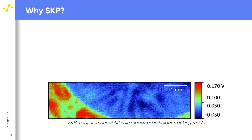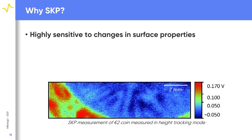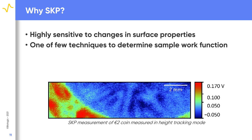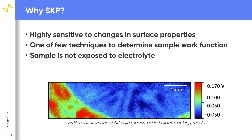What are the advantages of the SKP technique? SKP is highly sensitive to surface properties, making it useful for following changes in a sample surface, such as the formation of an oxide layer. By calibrating the SKP probe, it is possible to convert the contact potential difference to determine the sample work function, making SKP one of only a few techniques available to measure work function. Unlike other local electrochemistry techniques, in SKP the sample is not exposed to electrolyte, providing a snapshot of the sample at a given time. Finally, SKP performs all of these measurements in a non-destructive way.